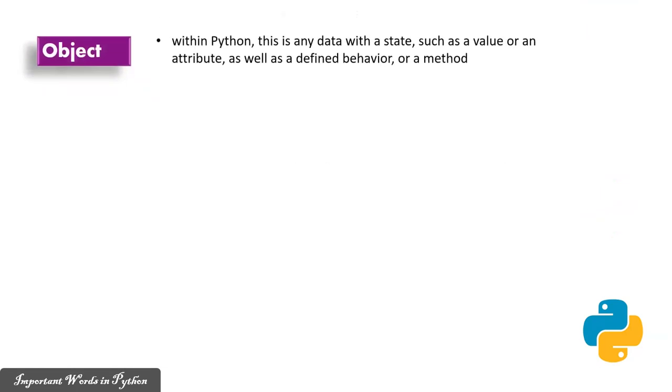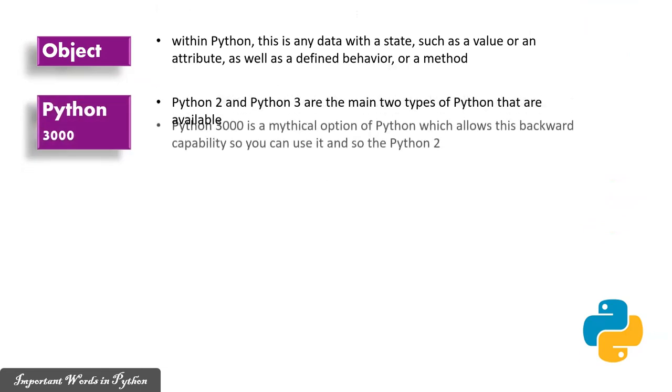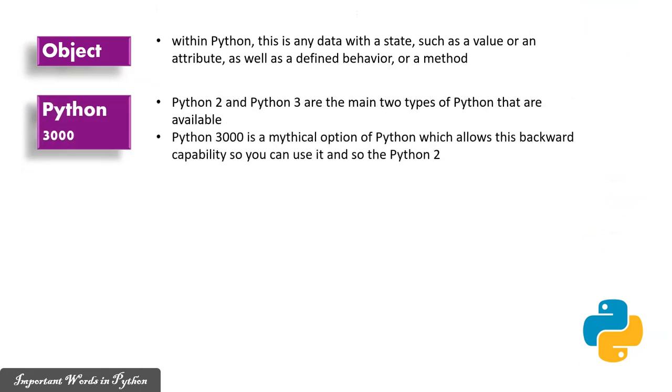Object: Within Python, this is the end data with a state such as value or an attribute, as well as a defined behavior or a method. Python 2 and 3 are the main two types of Python that are available. Python 3000 is a mythical option of Python which allows backward capability so you can use it with Python 2.